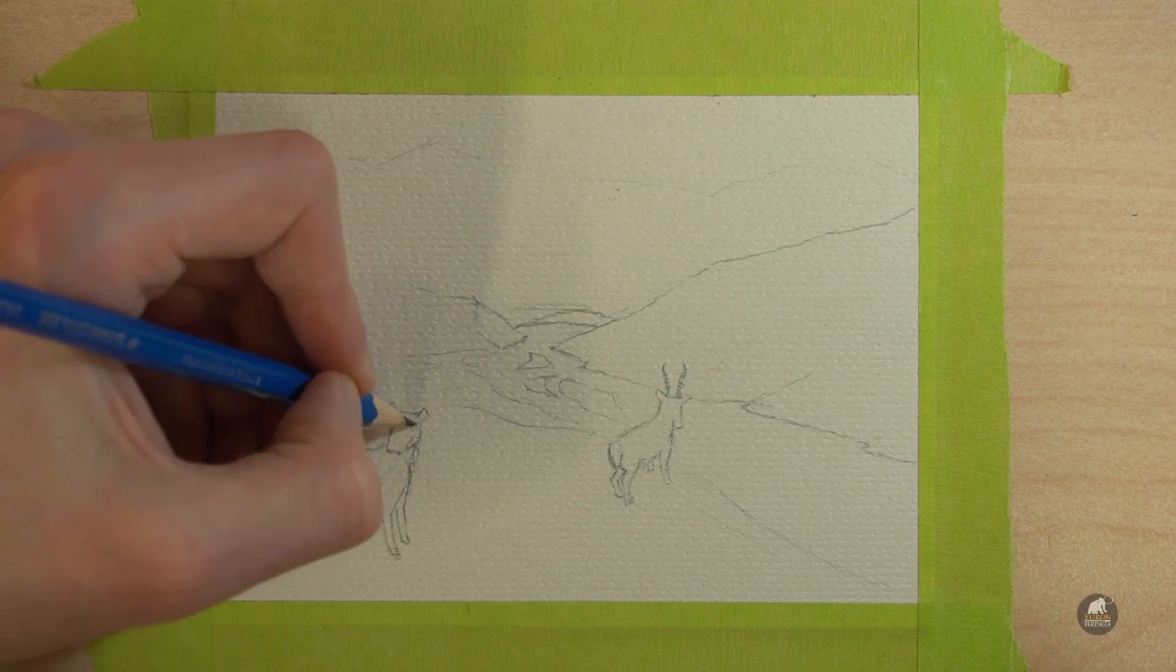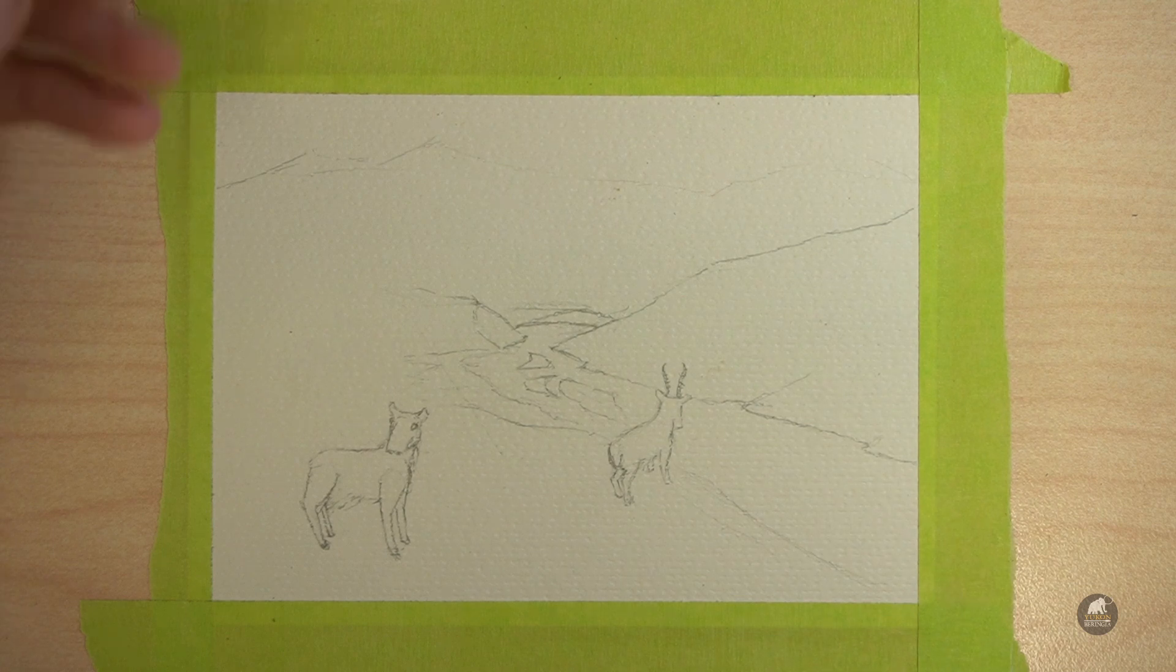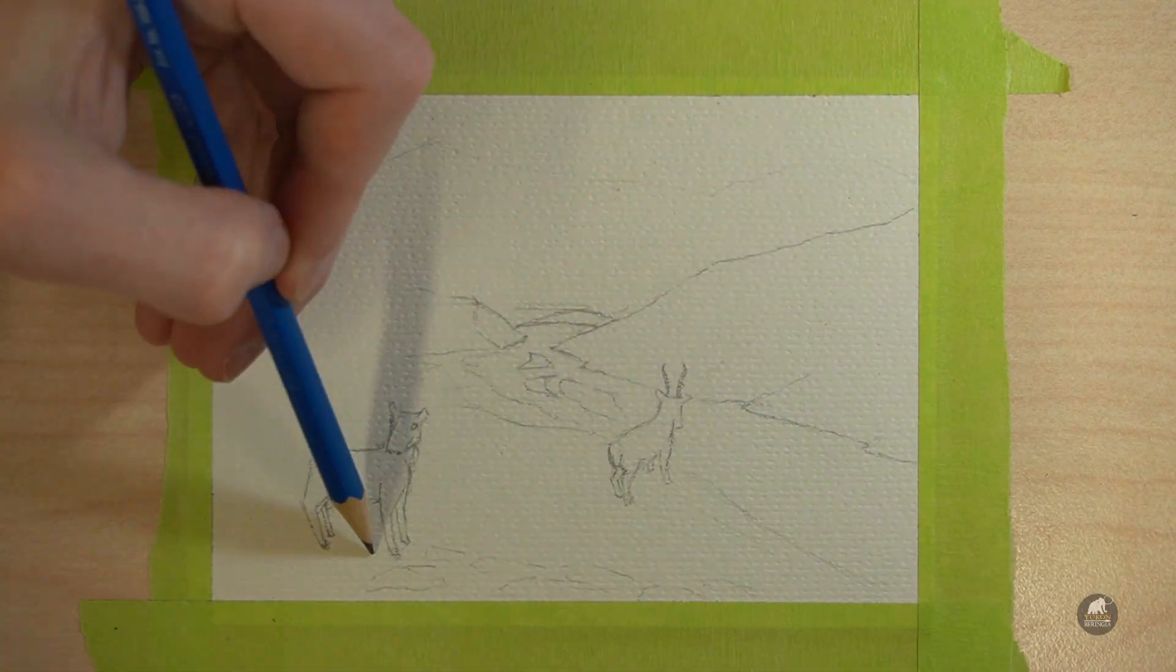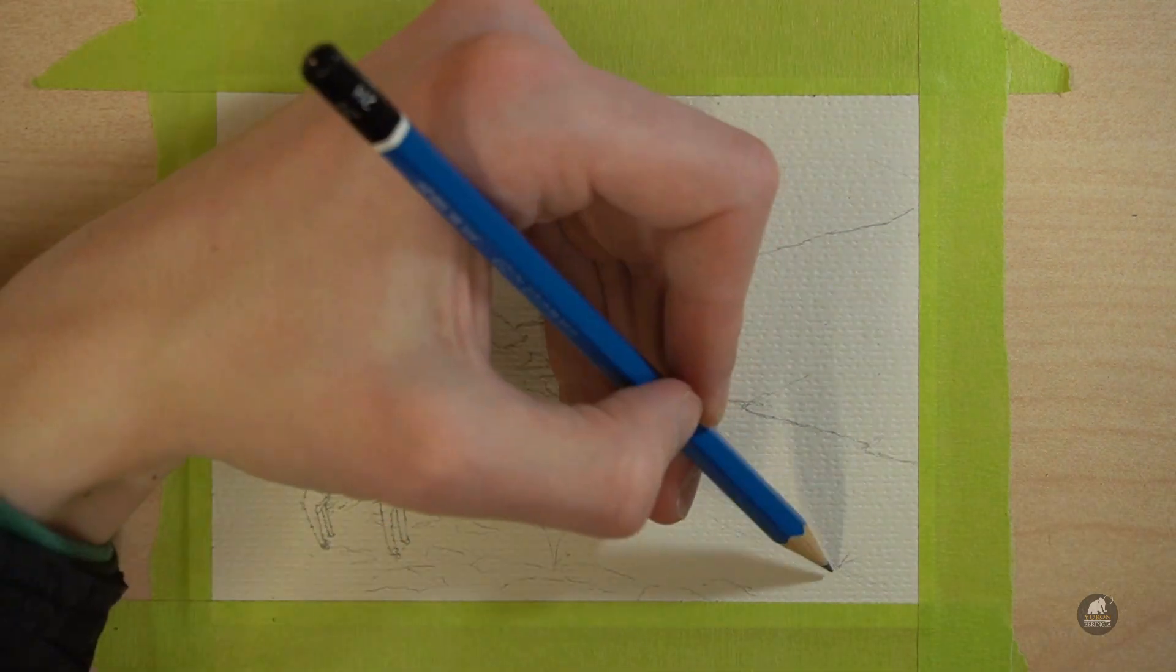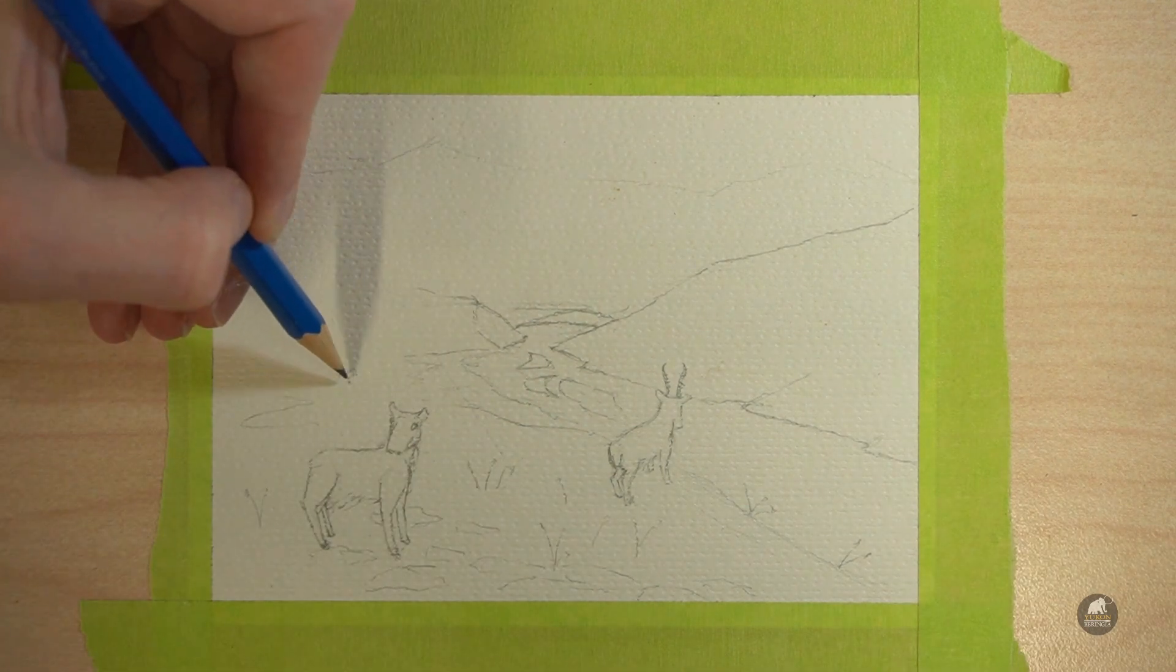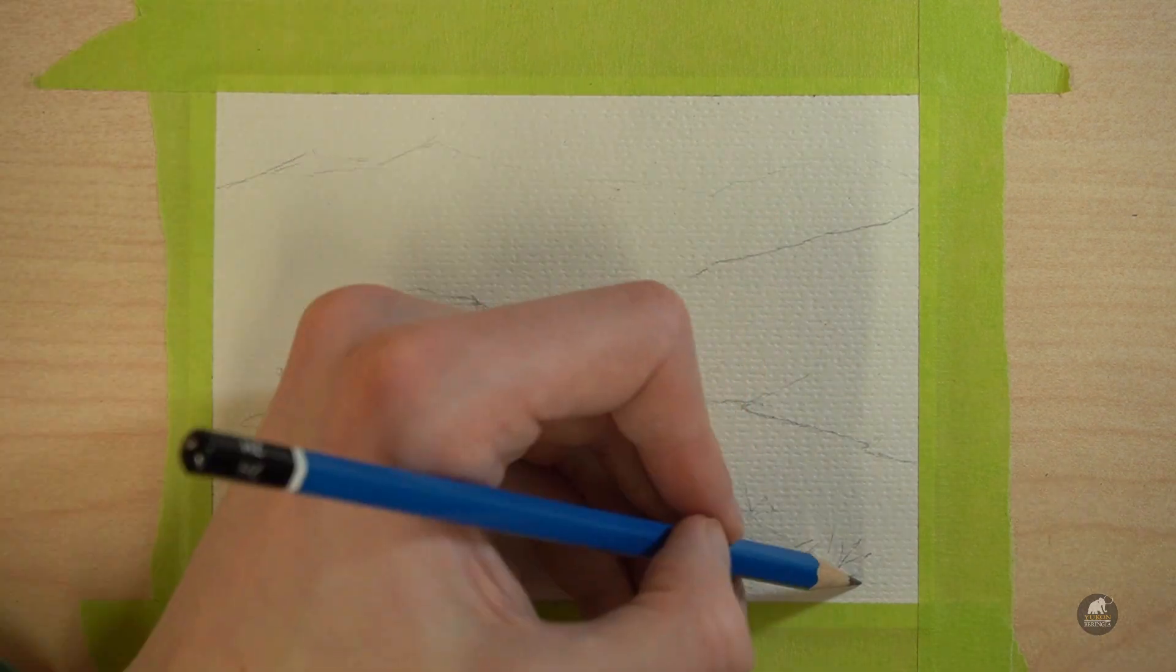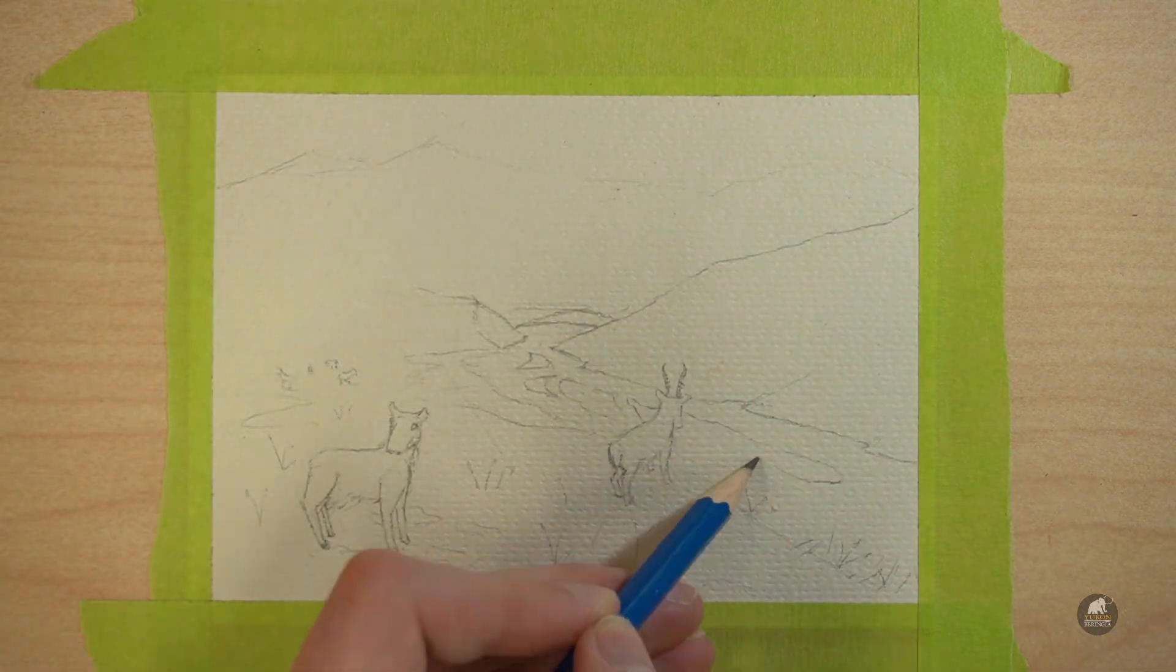And I'm just adding a bit more interesting stuff to the front or the foreground of our painting. Some little rocks and grasses and some saiga way in the background. Now I'm just finishing up those gravel bars in the river. And we're just about finished our drawing.